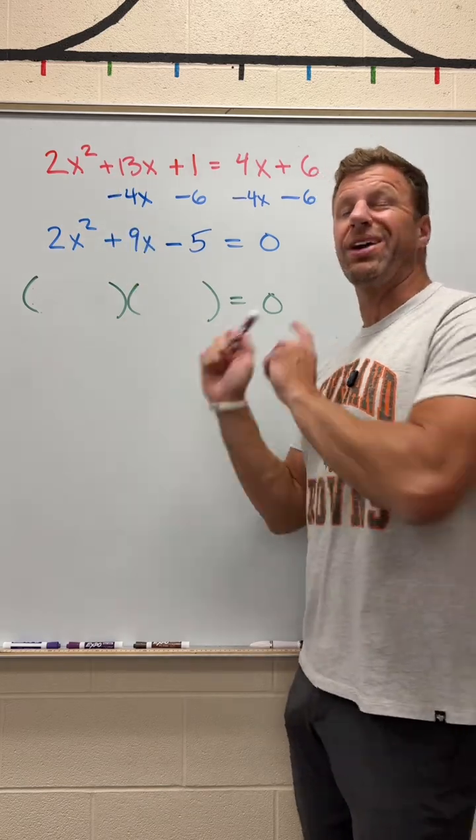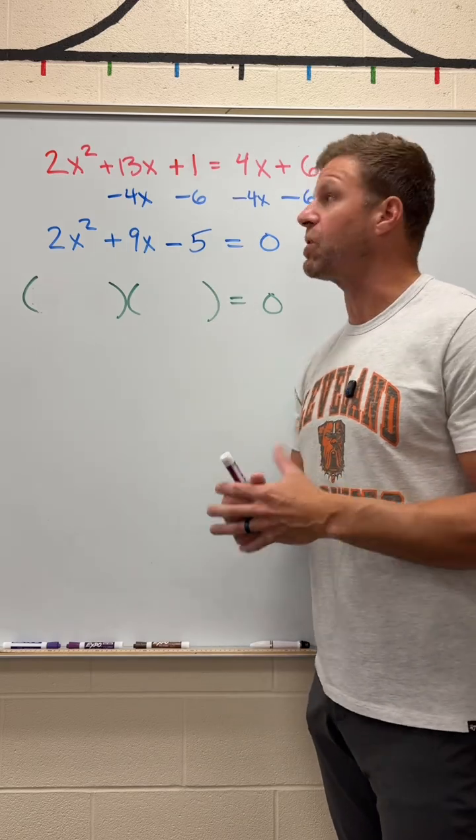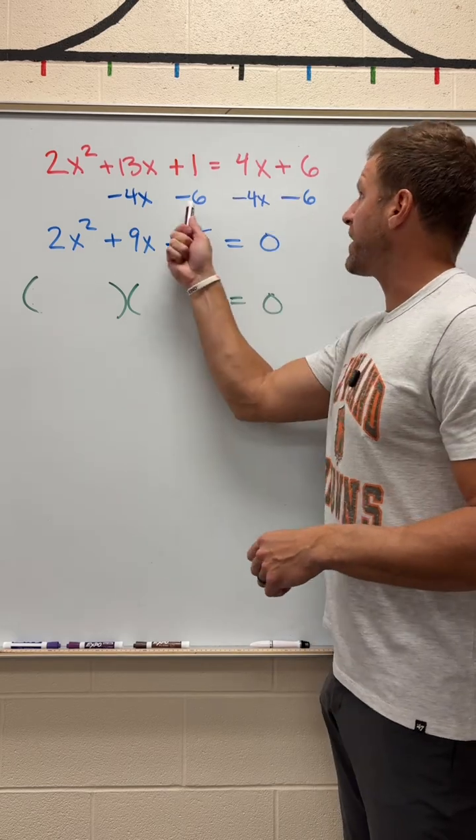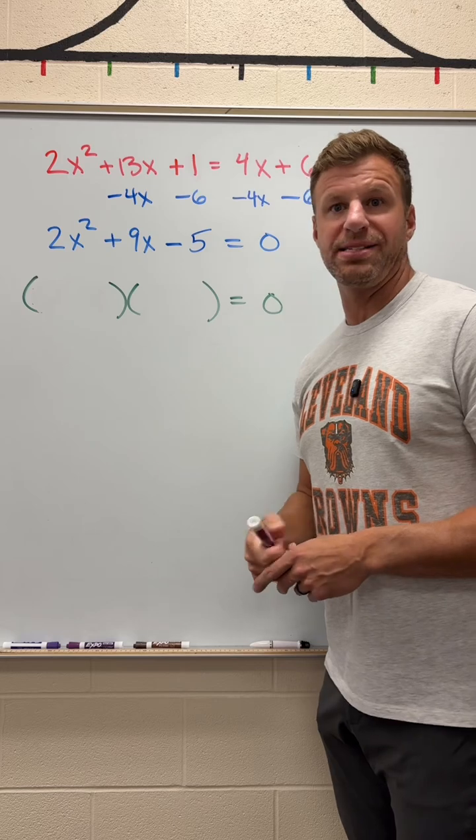Now, this is a quadratic, so I got to get everything on one side with the zero on the other side in order to solve it correctly. So I'm going to subtract the 4x over, making a 9x, subtract the 6 over, making a negative 5, and I get that zero on my side.